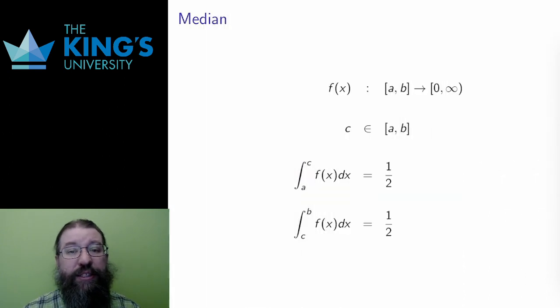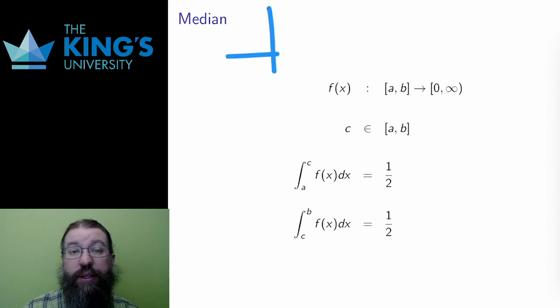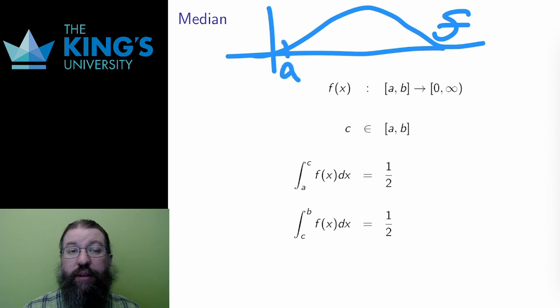After that discussion, let me actually define the median for continuous probability. As usual, I have a probability distribution f on a domain [a, b]. The area under the curve of f is exactly 1, and that means there will be some number in [a, b],